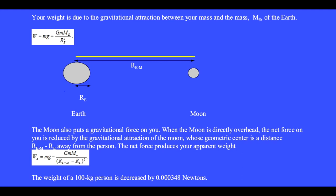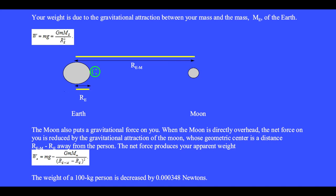Their centers are separated by the Earth-Moon distance, and here is the radius of the Earth. When you are here and the Moon is directly overhead, the net force on you is reduced by the gravitational attraction of the Moon, whose geometric center is the distance R sub eM minus R sub e away from the person. The net force produces your apparent weight: little m times g minus the gravitational attraction between you and the Moon. The weight of a 100 kg person is decreased by 0.0003 newtons.